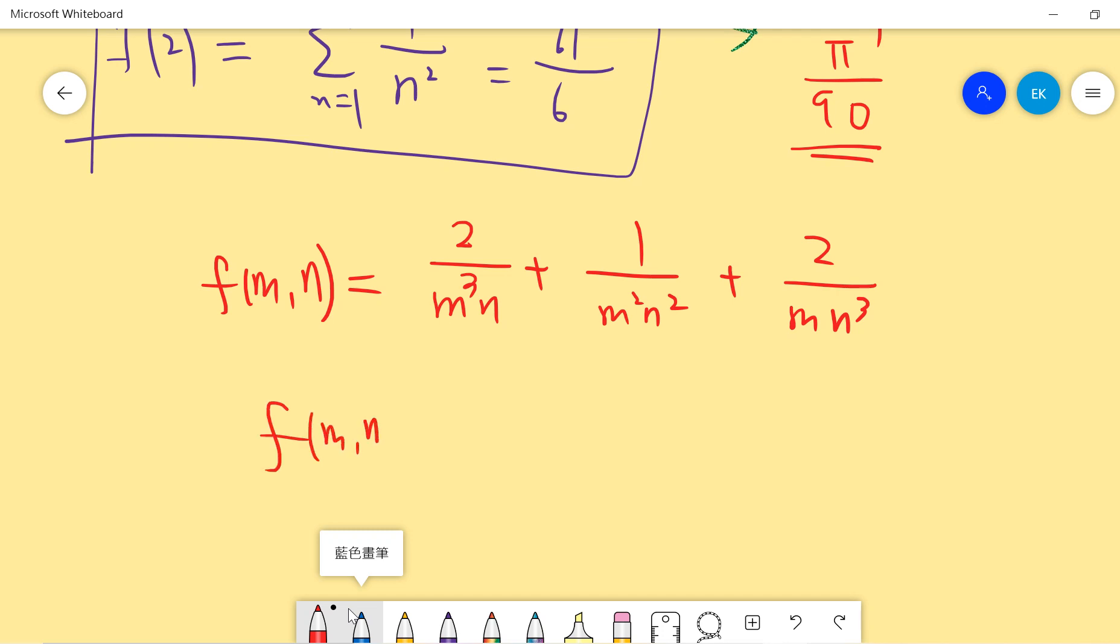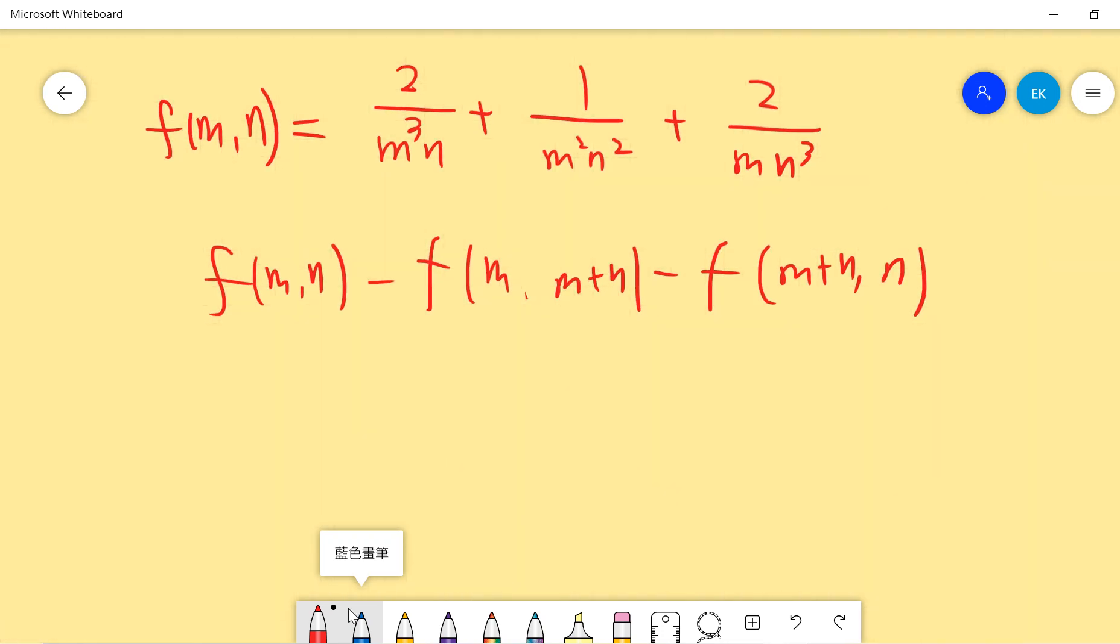Now then we compute these types of results. So we first compute this: f(m,n) plus f(n,m) minus f(m+n,m) minus f(m+n,n). You can compute this. It's somewhat tedious, but the result is 2 over m squared n squared.